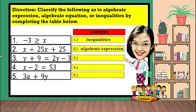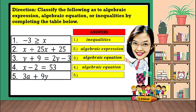For number 3, y plus 9 is equal to 2y minus 3. The answer is algebraic equation, simply because there is an equal sign. For number 4, x minus 2 is equal to 53. The answer is also algebraic equation, because there is an equal sign. For number 5, 3a plus 9y. The answer is algebraic expression, because there is no equal sign or symbol for inequalities.